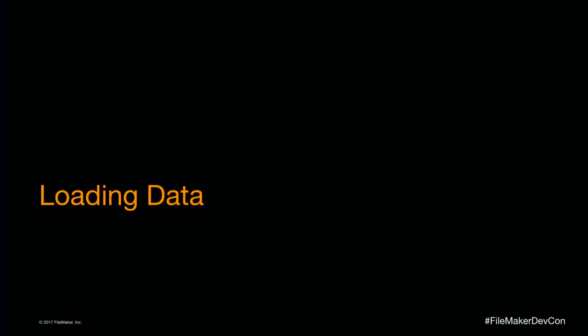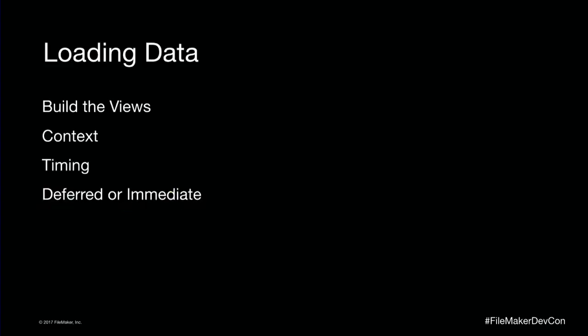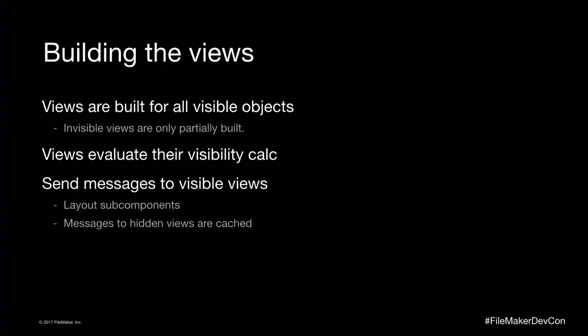Those are the basic components: the layout, layout objects living in parts, parts containing information about context, and layout objects giving us instructions for drawing. The steps when you load a layout for the first time: first, build the views; then figure out the context; then start the process of loading the data. The first step is building the views — we go through all the visible objects. We're not going to build a view for every single layout object. Things scrolled off to the side or past the layout's edge only partially get built up, in suspended animation waiting for you to scroll them into view.